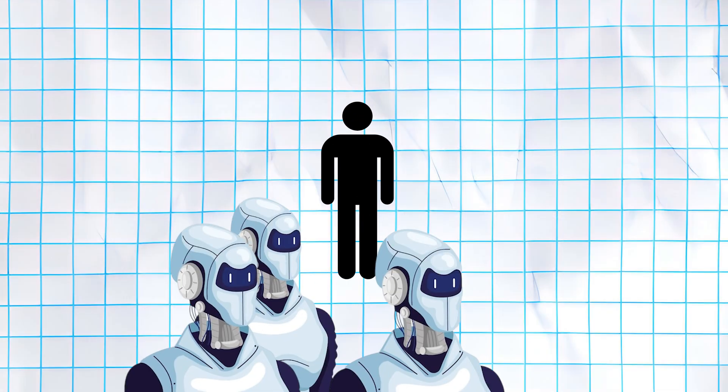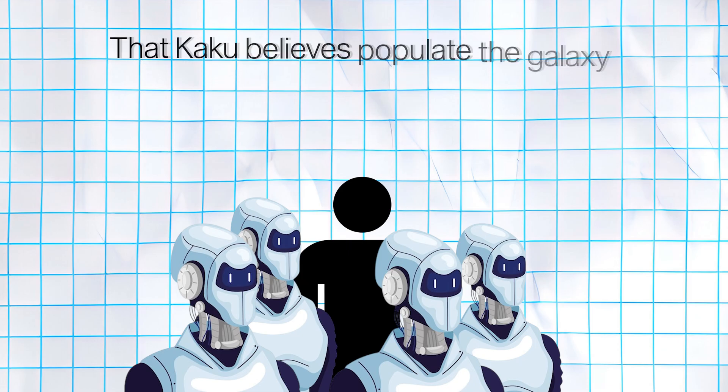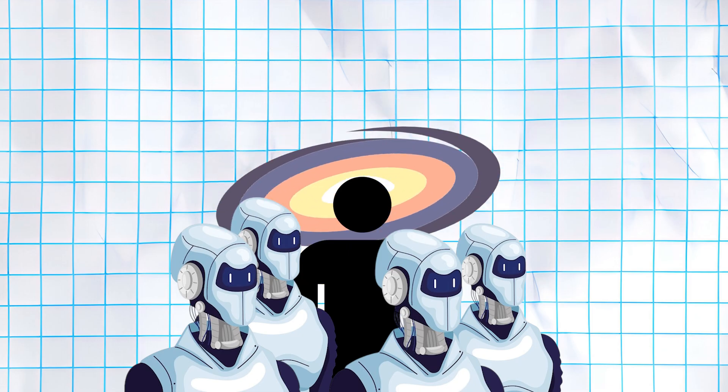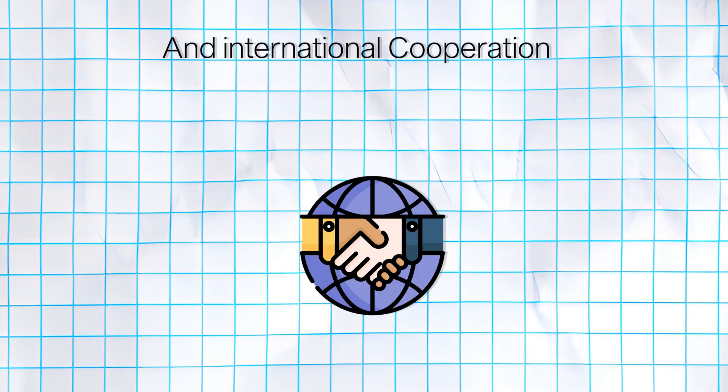If humanity successfully makes this transition, we might eventually join the community of advanced artificial civilizations that Kaku believes populate the galaxy. However, this transition requires wisdom, careful planning, and international cooperation on a scale that humanity has never before achieved.